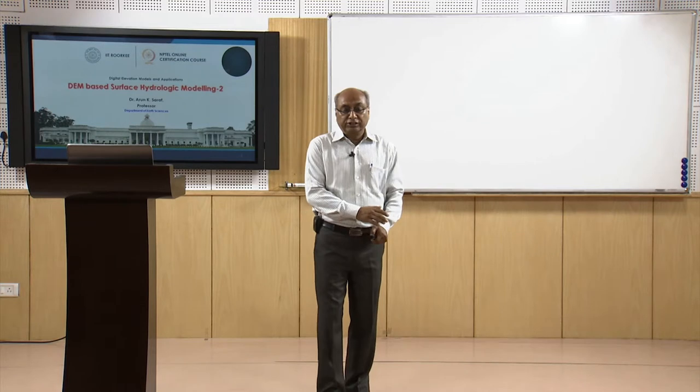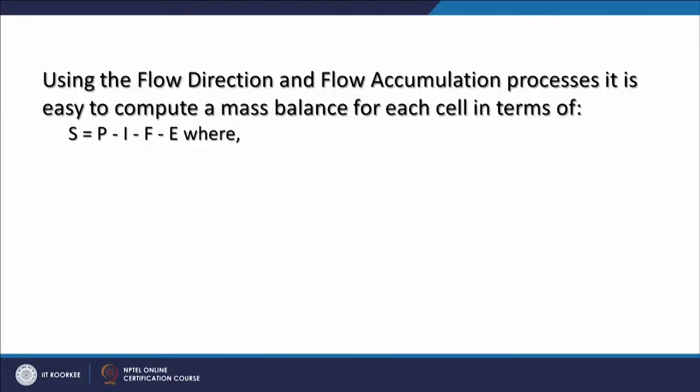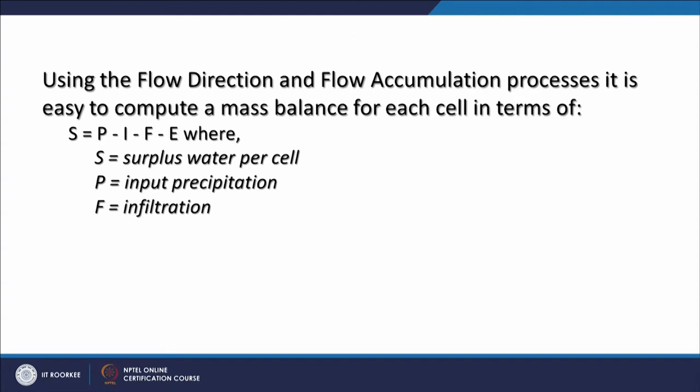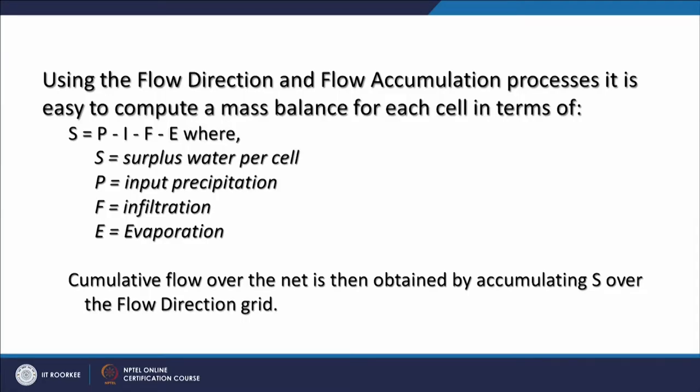Using the flow direction and flow accumulation themes, it is easy to compute a mass balance for each cell: s = p - i - f - e, where s is surplus water per cell, p is input precipitation, i is interception, f is infiltration (water going downward), and e is evaporation or evapotranspiration. When these are accounted for, we can calculate the surplus water per cell, which basically decides the runoff. The cumulative flow over the network is then obtained by accumulating surplus water s over the flow direction grid.